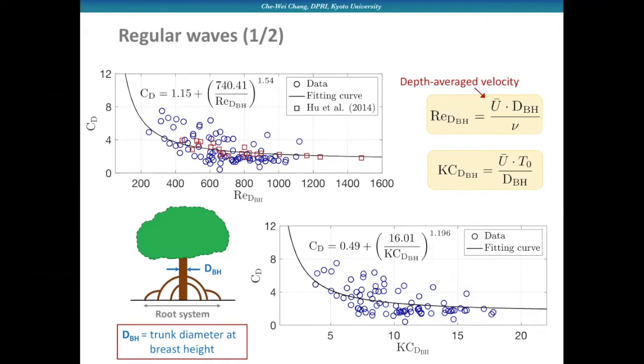In the upper plot, we also compare with the experimental data reported in Hu et al. in 2014, which used cylinders. The diameter of their cylinders was the same as the dbh of our 3D printed tree models. Our fitting curve covers their data range pretty well, although we got more scattered data because of the root system, which has impact on velocity measurements.